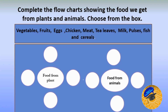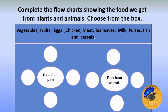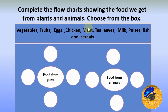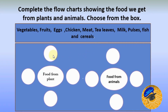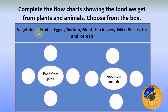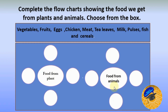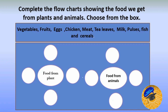The food we get from plants and animals. Choose from the books: vegetables, fruits, eggs, chicken, meat, tea leaves, milk, pulses, fish, and cereals. What you have to do is go through the words and find which food items you get from plants and which you get from animals. You need to solve it. That is your activity.